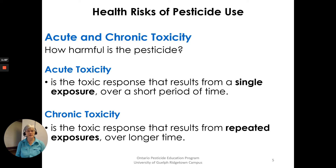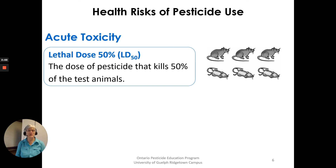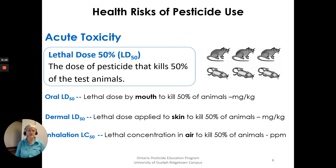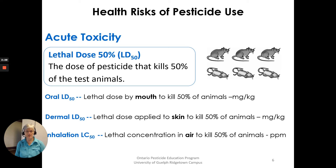The pesticide is evaluated on both types of toxicities. Acute toxicity is referred to as a measurement of lethal dose 50% — the dose of a pesticide that kills 50% of the test animals. Oral LD50 is a lethal dose by mouth to kill 50% of the animals, usually expressed as milligrams per kilogram of body weight. Dermal LD50 is the lethal dose applied to skin to kill 50% of animals, and inhalation LC50 is the lethal concentration in air to kill 50% of animals, expressed in parts per million.